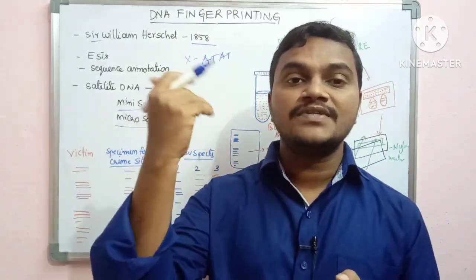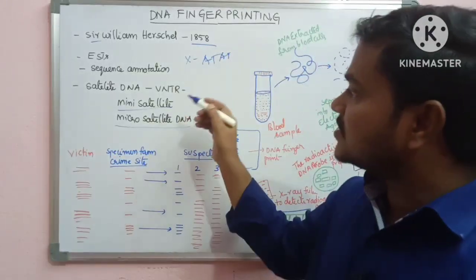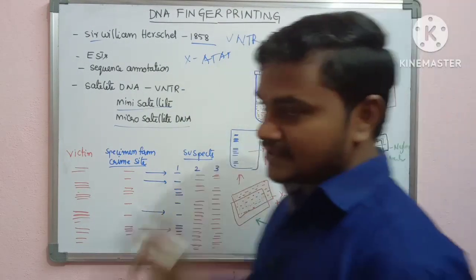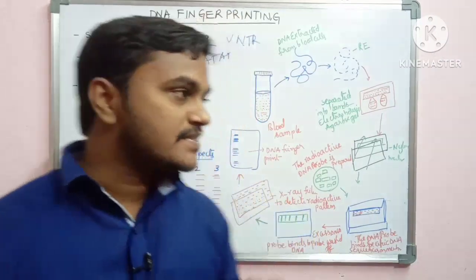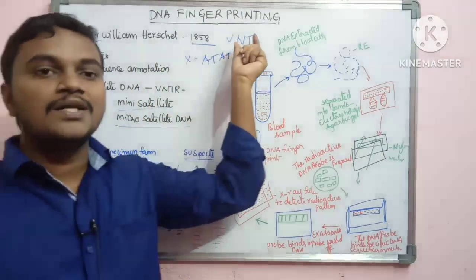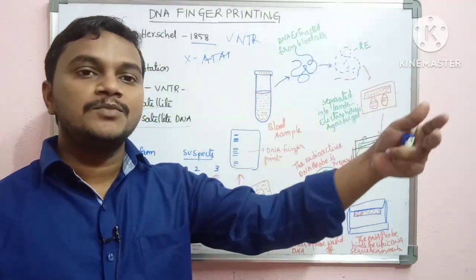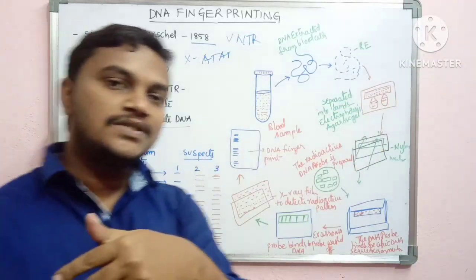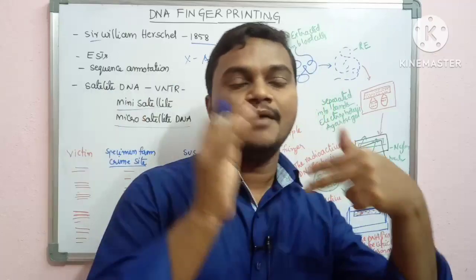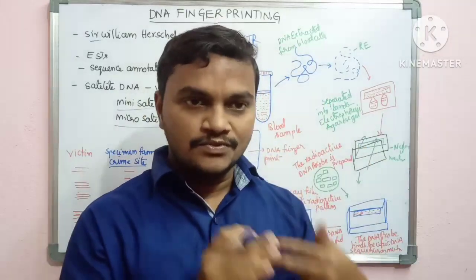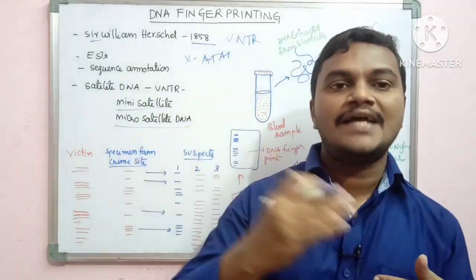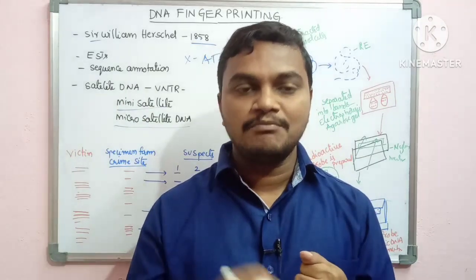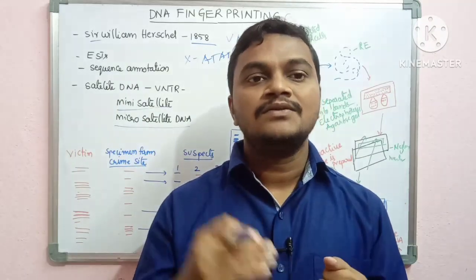If a particular person has a certain number of repeated sequences, those are called variable number tandem repeats (VNTR). VNTR is a polymorphic condition and is inheritable — the repeated sequences of parents will match the same pattern in their children.